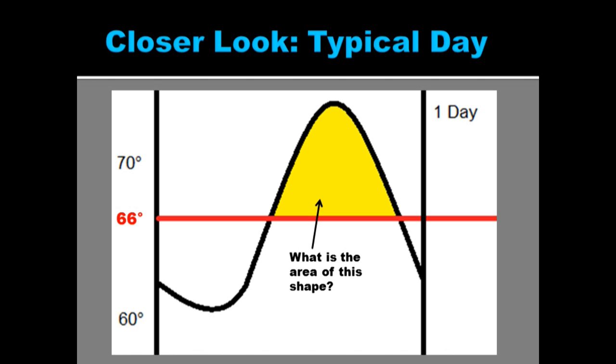So we look at a typical day and we say, okay, it's going to pass above that threshold. The threshold here is marked as 66 degrees and drawn with the red line. So the threshold here is, we need to know how much area is above this curve.